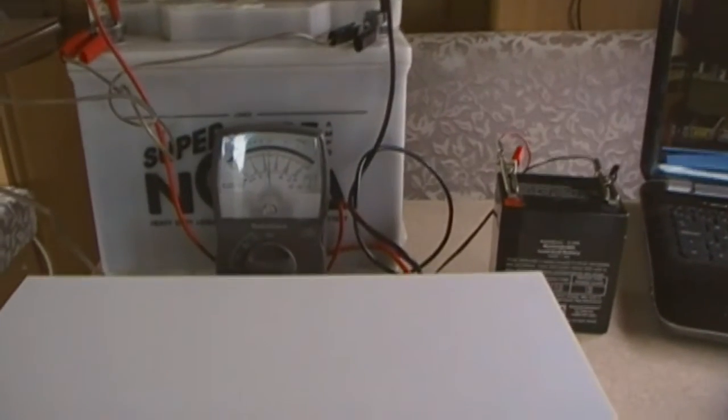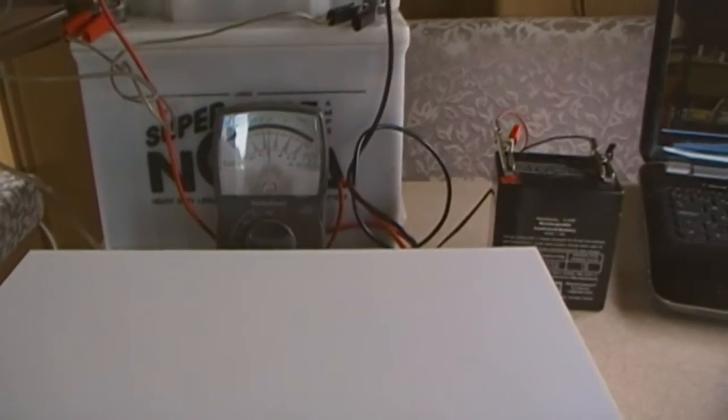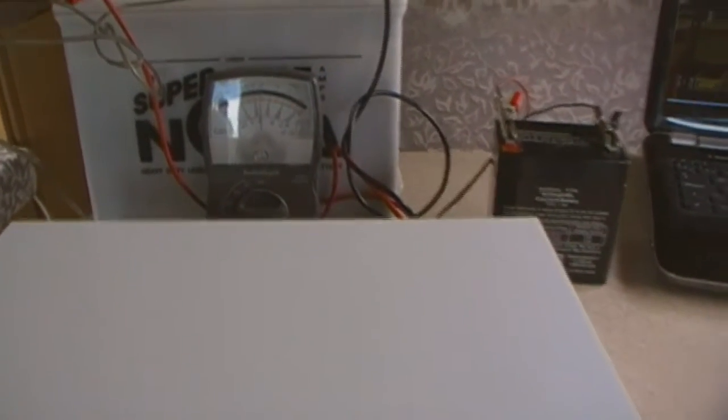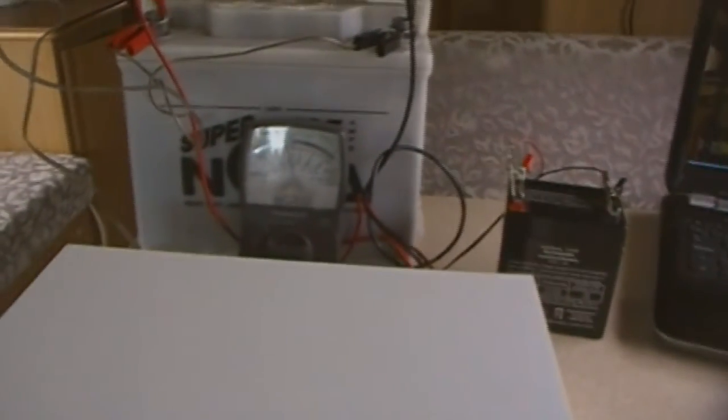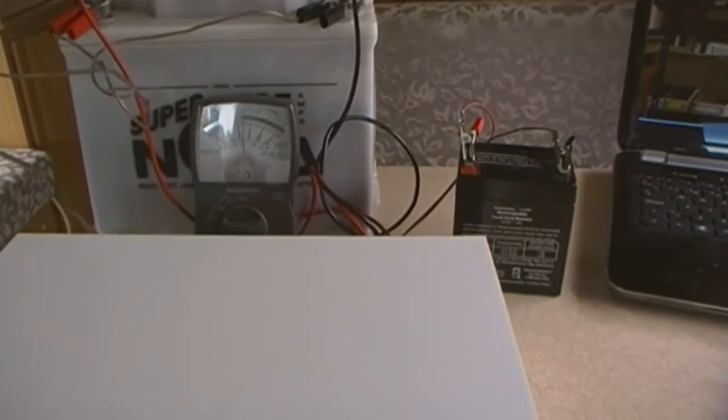But I do know that as the frequency goes up the current draw on this battery goes way down. So I think it's just a matter of balancing the current draw with the charging voltage. But as soon as I get an oscilloscope I'll be able to figure out exactly what's going on. So I'm operating on a bit of a shoestring budget at the moment so oscilloscope might take a bit of time to come along.